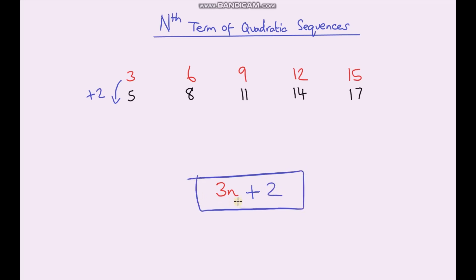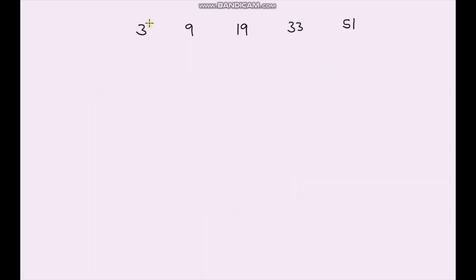Hopefully that's familiar — just a recap. Now we're going to move on to another sequence, this time a quadratic sequence. You'll see why it's quadratic in a moment. To calculate the nth term, we're going to start off by doing exactly the same thing as before: calculate the difference between each term.